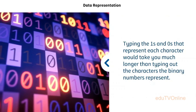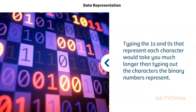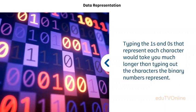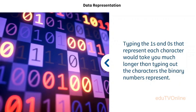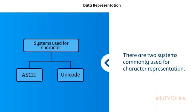Imagine having to type in each binary digit needed to create your favorite images — it would be extremely difficult. Depending on resolution, a character might require 100 bits of data, and an image might require millions of bits. A number of systems and software were developed to handle this for users, helping a computer store different data such as text, images, video, and audio.